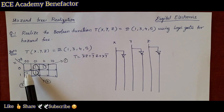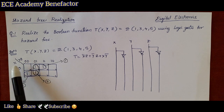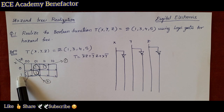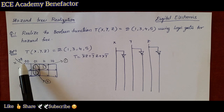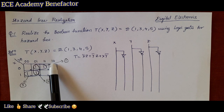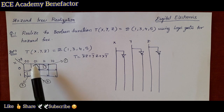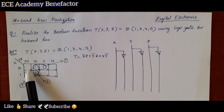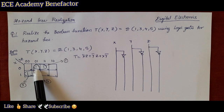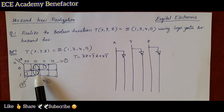The cell numbering for the K-map is based on x, y, z. x takes values 0 and 1; y, z takes values 00, 01, 10, 11. Based on this, the cell numbers are 0, 1, 2, 3, 4, 5, 6, 7.